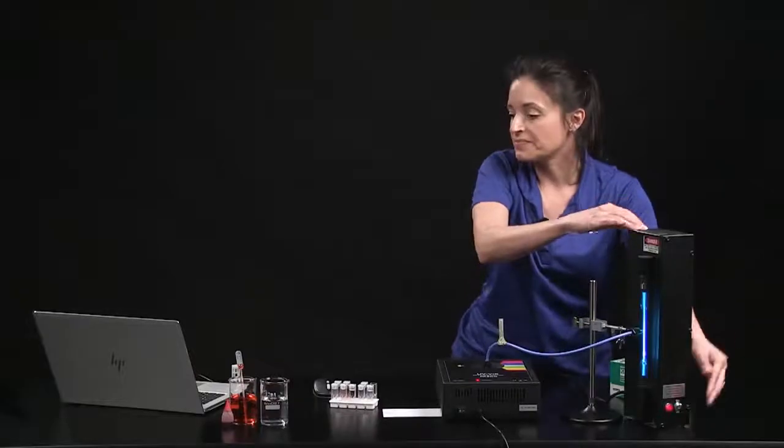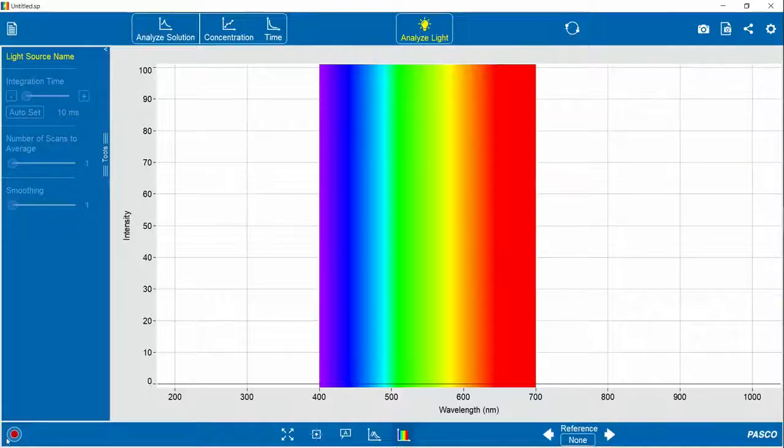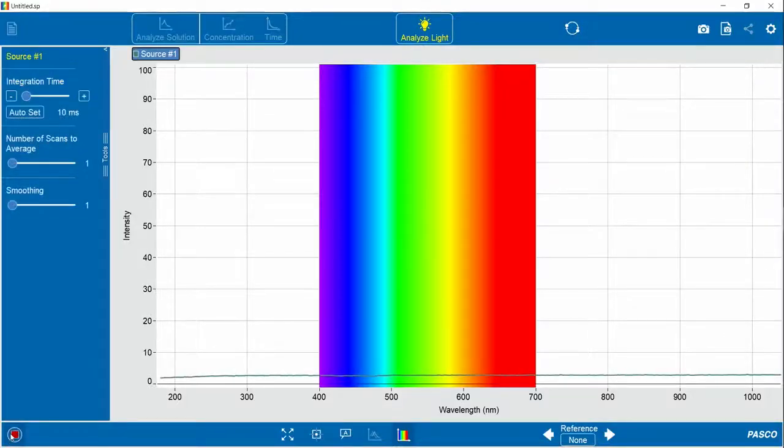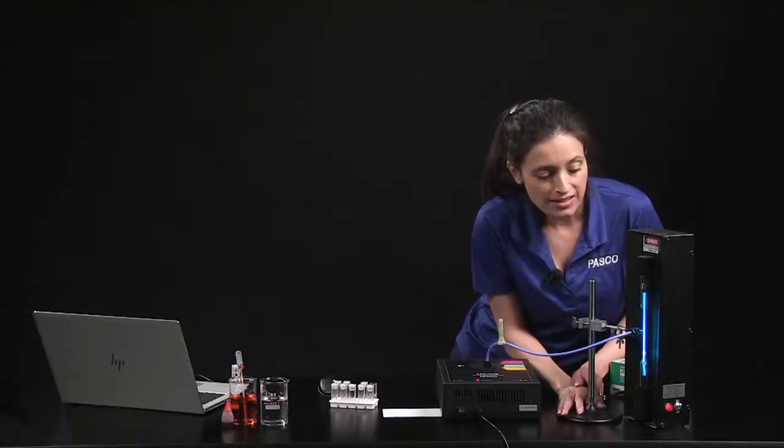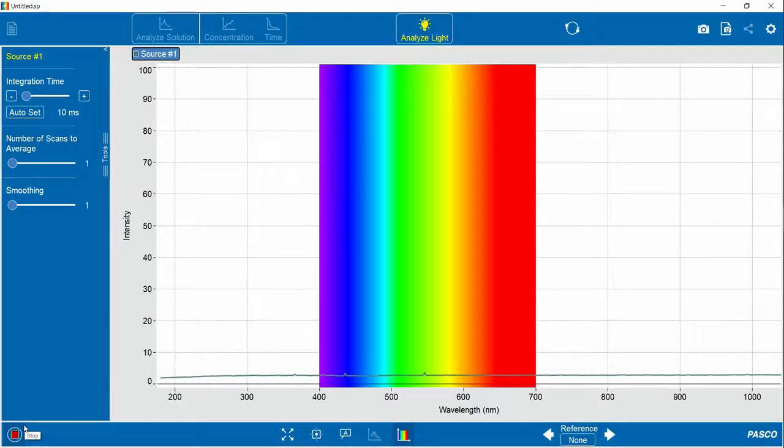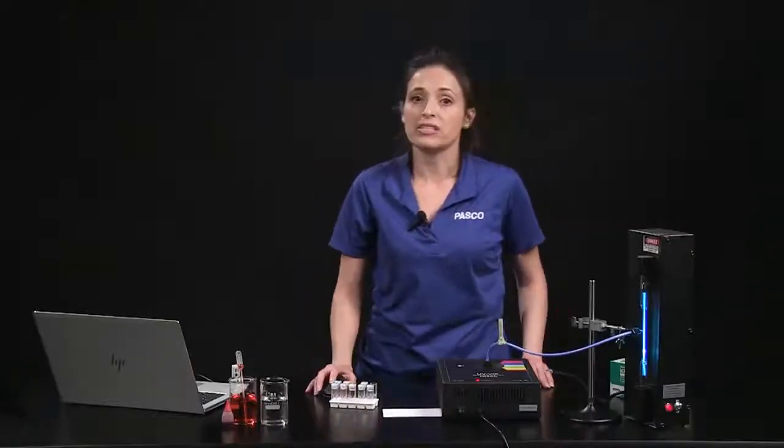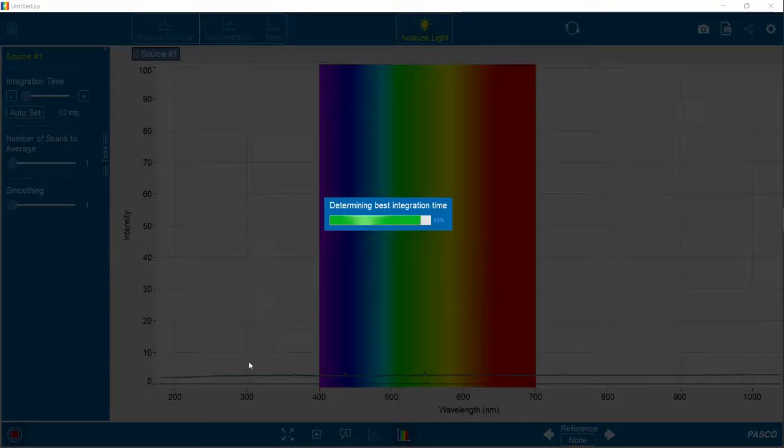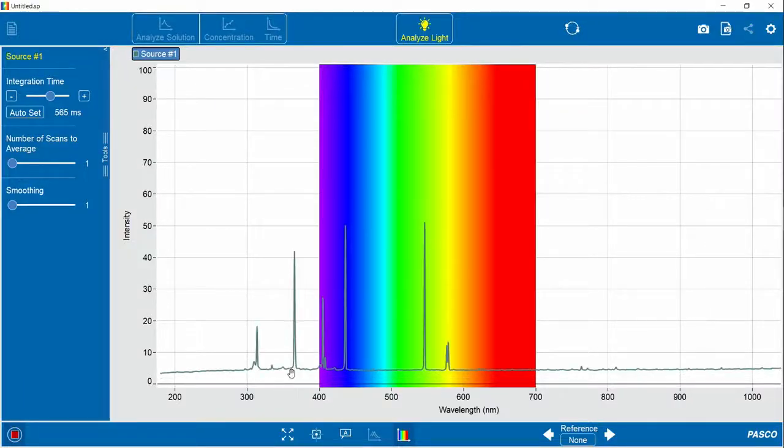Turn on your light source, start collecting data. Let me adjust the distance and position. And I can improve the signal if I auto-set the integration time to eliminate background noise. The software does this automatically.